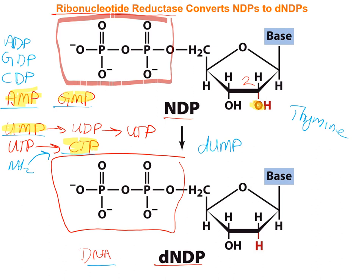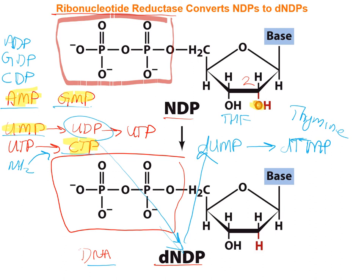Thymine is made very differently — it's actually made from deoxy-UMP. We take UDP, ribonucleotide reductase converts it to deoxy-UDP, then a phosphate is removed to give deoxy-UMP. Deoxy-UMP is converted to deoxy-TMP, with the methyl group donated by tetrahydrofolate. Cytosine is made as the triphosphorylated form, and thymine is exclusively a member of DNA, so we make the deoxy-TMP form.